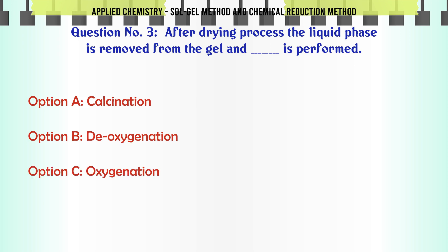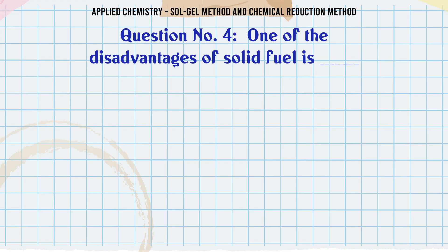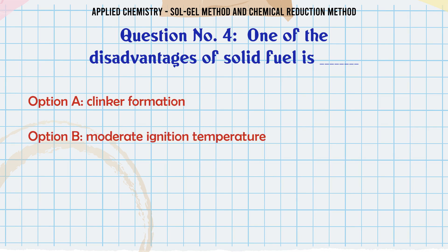After the drying process, the liquid phase is removed from the gel and which process is performed? A. Calcination, B. Deoxygenation, C. Oxygenation, D. Hydrogenation. The correct answer is Calcination.